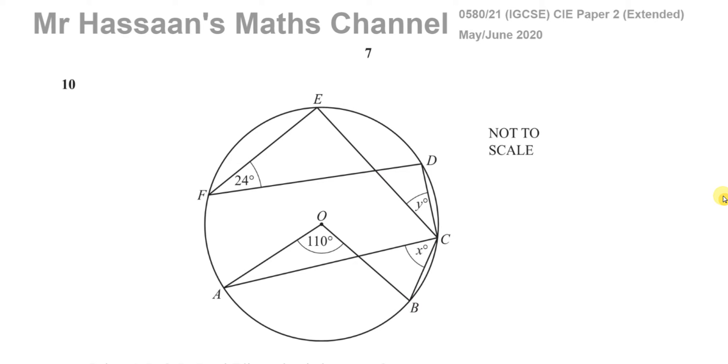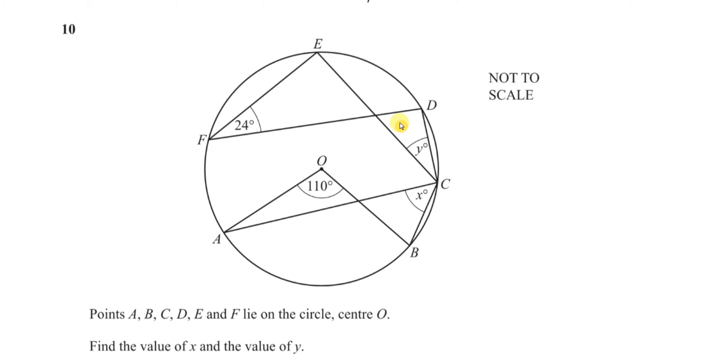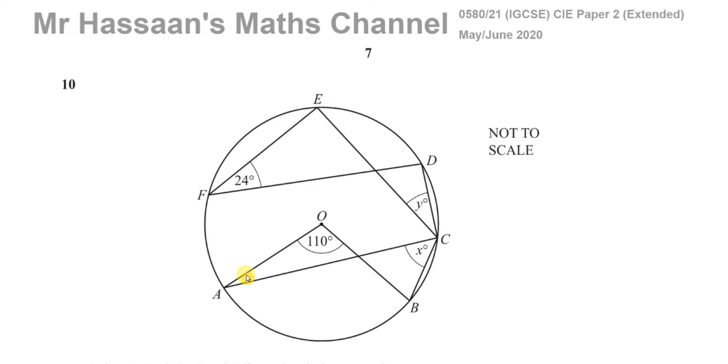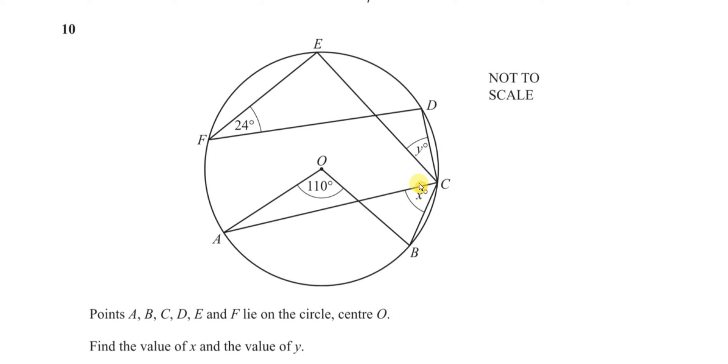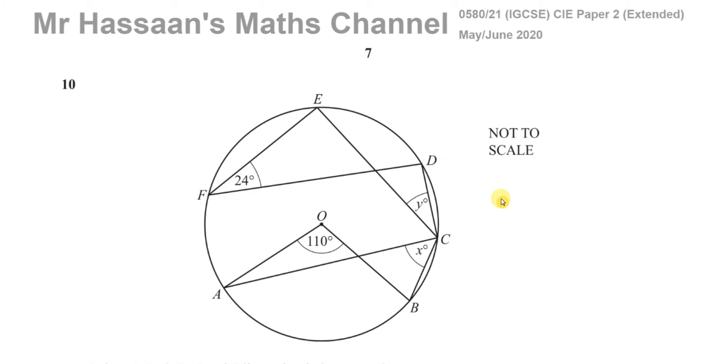And this question here is about angle theorems, angles in circles. Here we have a circle, and we've got points A, B, C, D, E, F, all lie on the circle, on the circumference of the circle, which has a center at O. We are asked to find the value of X and Y.